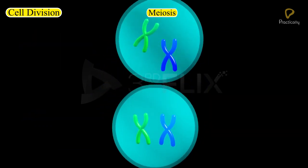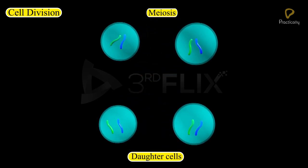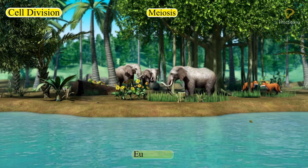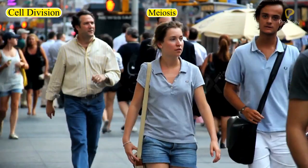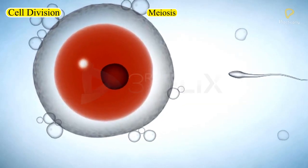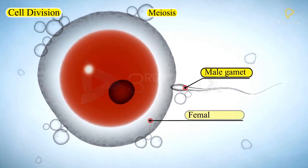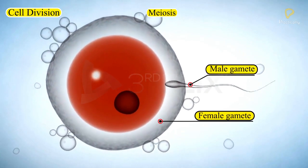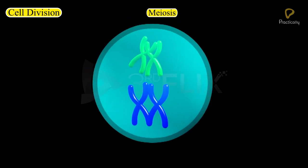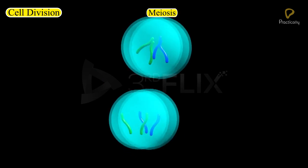Why is the chromosome number reduced to half in daughter cells? The reduction of chromosome number in meiosis is a central event in the lives of most eukaryotes, including humans. It makes diploidy possible because the gametes produced with half the chromosome number of their parent cells can then fuse to form a diploid zygote. It ensures that organisms have the same number of chromosomes in each generation.